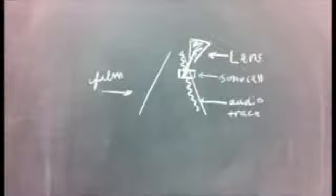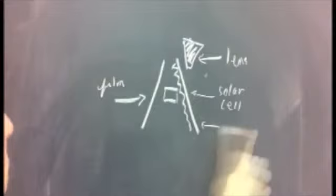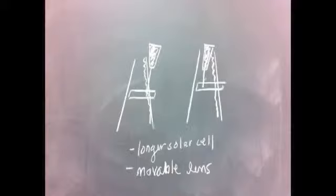Professor Nishikawa would like the solar cell to move to the middle of the film, so that it will read not only the audio track, but the light from the picture. We decided to lengthen the solar cell so that it reaches from underneath the audio track to the film picture. The lens can move between these two locations.